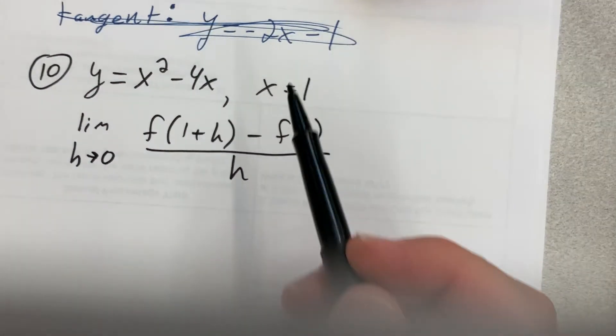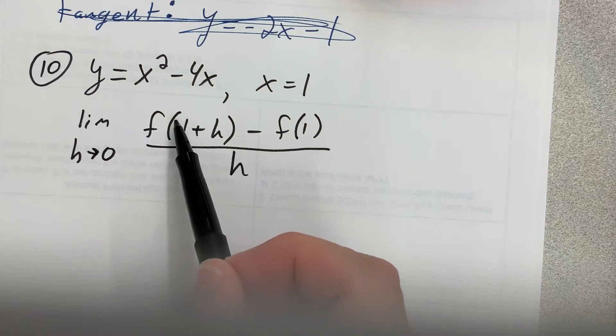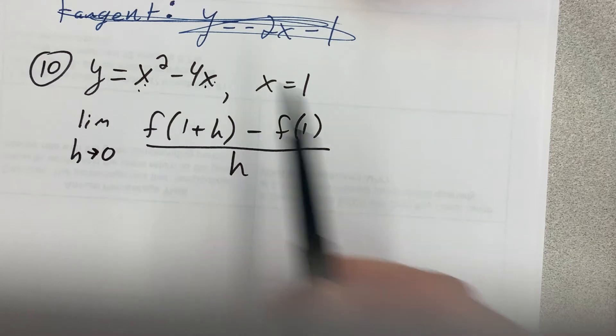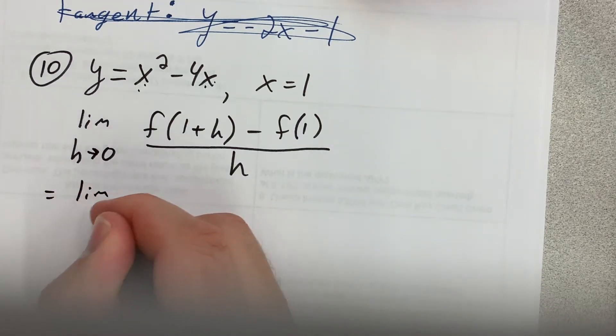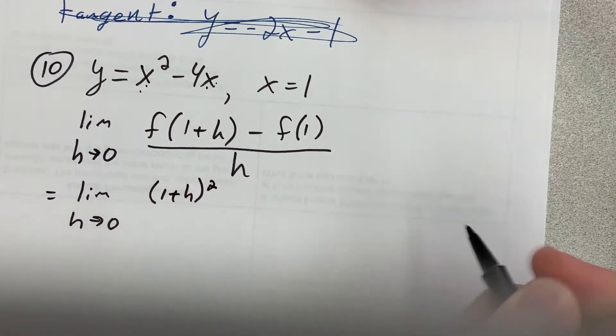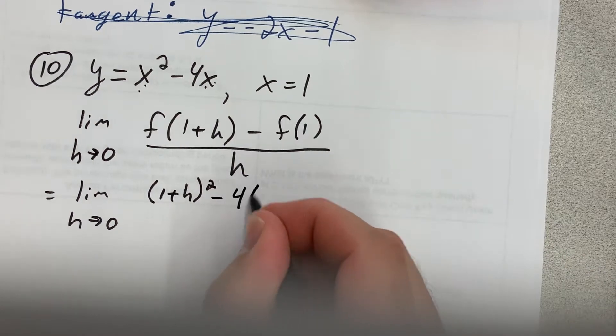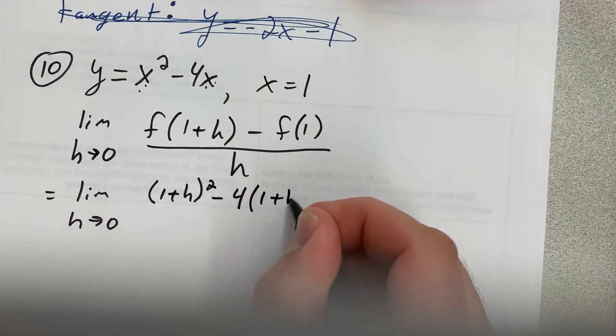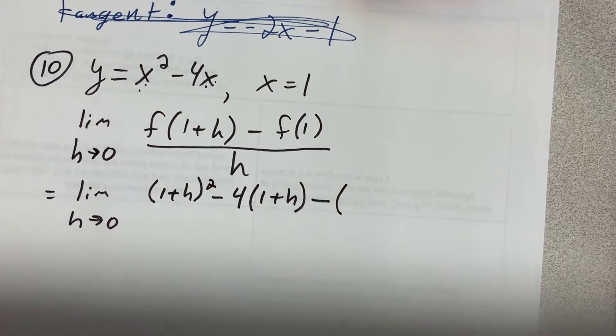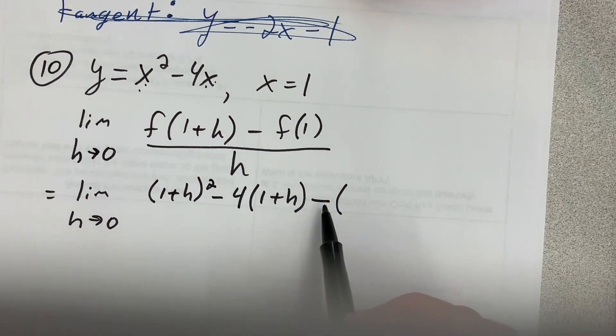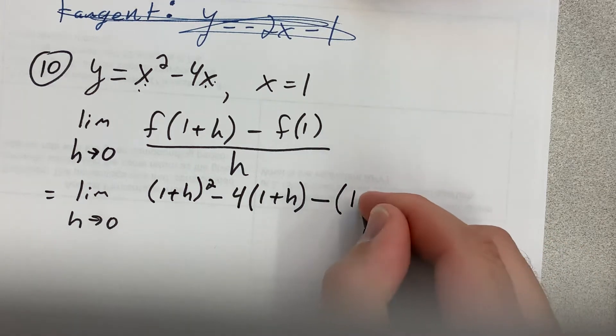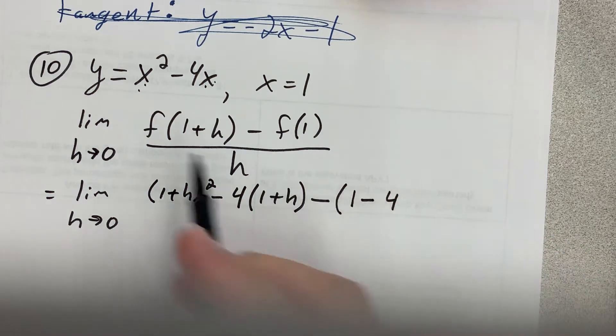All right, so then the question is, what is f of 1 plus h? Well, that means you take 1 plus h and you plug it in here everywhere you see an x. So I'll go in here and here. You end up with this: limit as h approaches 0. f of 1 plus h, so that would be 1 plus h squared minus 4 times 1 plus h minus f of 1. We've got to be careful here. It's going to be minus, and then I always just put an open parenthesis there. It's minus the whole thing. It's really easy to get sloppy with negative signs here and make a mistake. So, minus f of 1. f of 1 is going to be 1 minus 4, just plugging in 1 for x here.